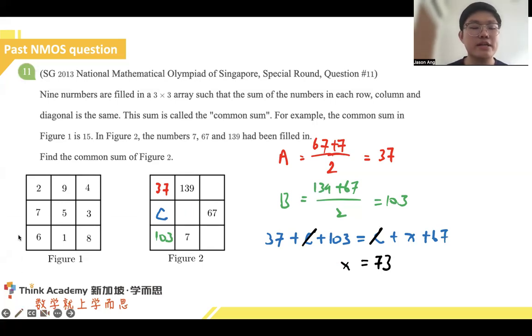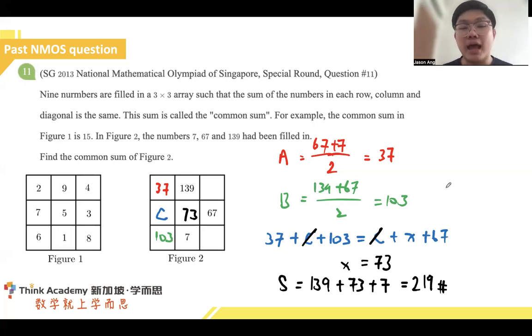Even without deducing the rest of the numbers inside the question, I have already found my answer. Because the common sum for each row will be 139 plus 73 plus 7. Adding all this up, it gives us 219. And just like that, with some special proofs that we just talked about and adding on with this little special method of trying to equate two lines together to find the sum, we managed to get the middle number allowing us to deduce the final answer.